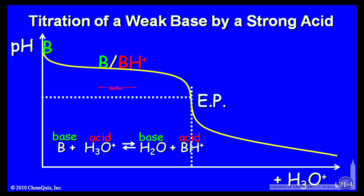In this region, the buffer region, I have about equal concentrations of the base and its conjugate acid. So about equal concentrations of an acid and its conjugate base gives you a buffer. It resists change in pH.